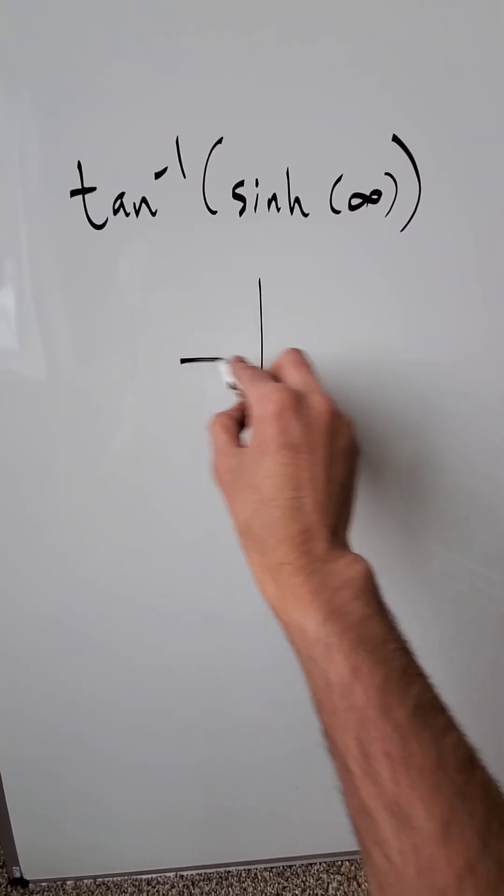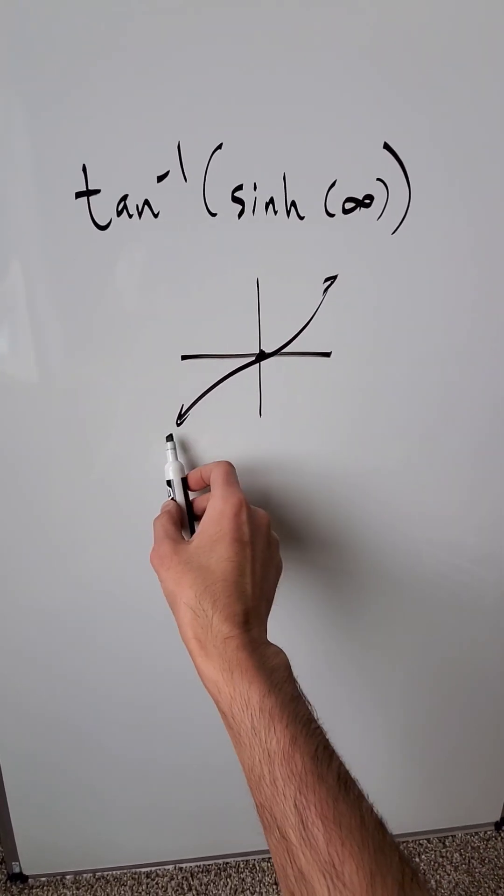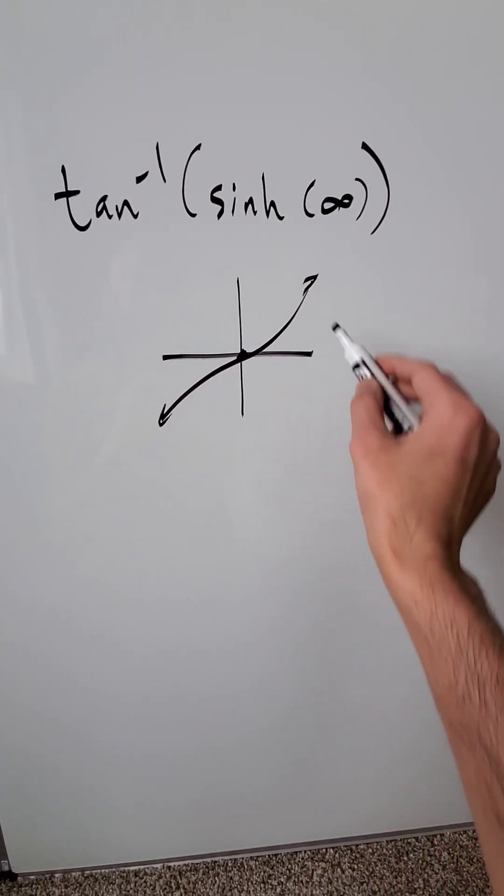Let's look here at hyperbolic sine. The graph is like this. It's an odd function going through the origin. You have a domain minus infinity to positive infinity, range from minus infinity to positive infinity. As your values of